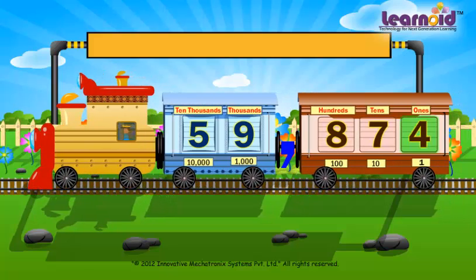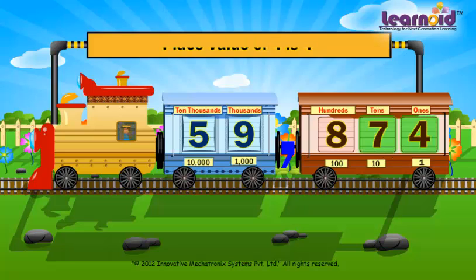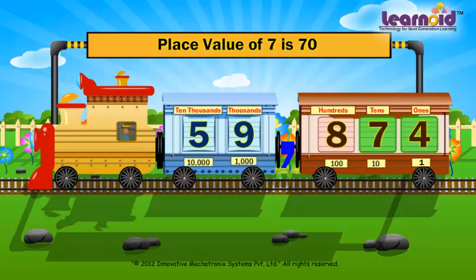Number 4 is in the 1's window. Its place value is 4. Number 7 is in the 10's window. Its place value is 7 10's, or 70.